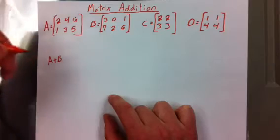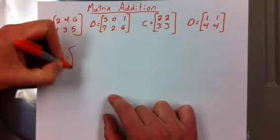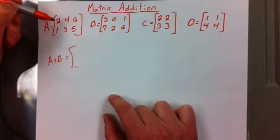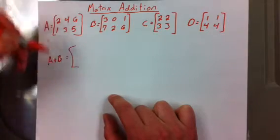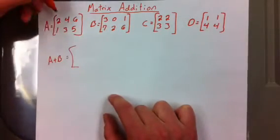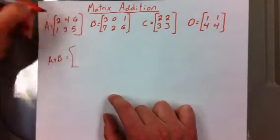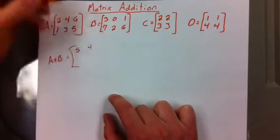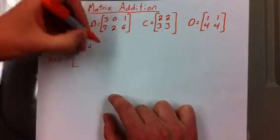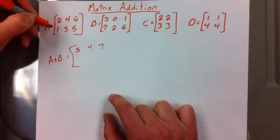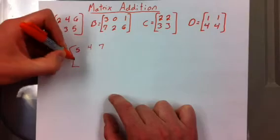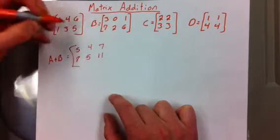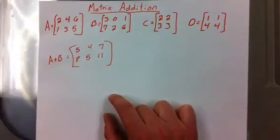When you're adding or subtracting, you have your matrix, and the result matrix is going to be the same size as your two beginning matrices. So you just take the components and add them component by component, so you do 2 plus 3, we're going to have 2 plus 3 is equal to 5, then 4 plus 0 is 4, 6 plus 1 is 7, then 1 plus 7 is 8, 3 plus 2 is 5, and 6 plus 5 is 11. So that's how you do matrix addition.